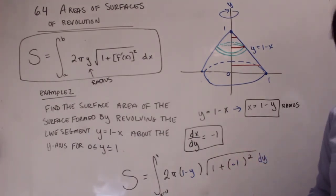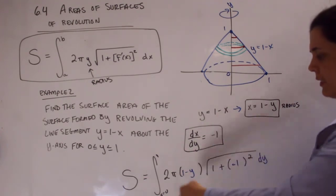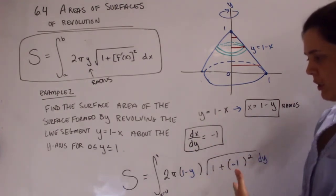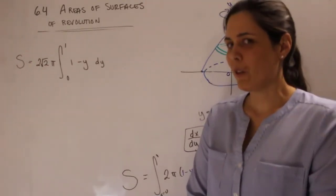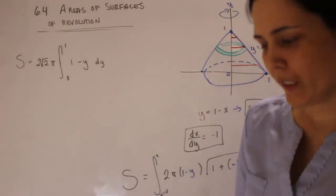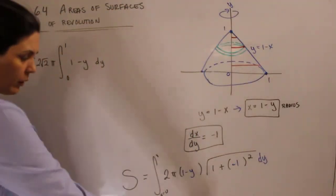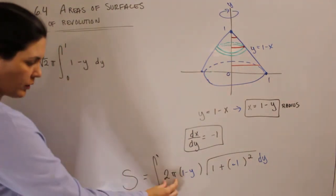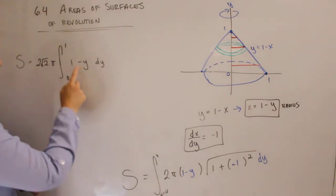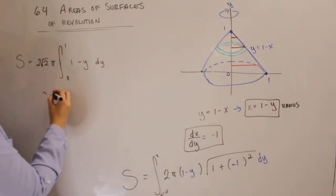And now we have our setup. So the more challenging part is the setup. From here, the integration is not going to be so bad. So we're just going to simplify this. So the square root part became a 2. We went ahead and factored that out along with the 2 pi. And we were just left with 1 minus y inside our integrand. And so let's go ahead and integrate this real fast. Not going to be a bad one.